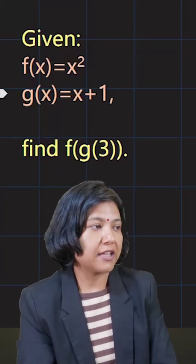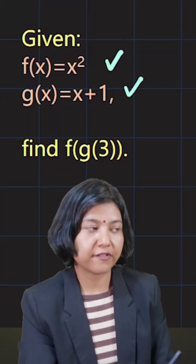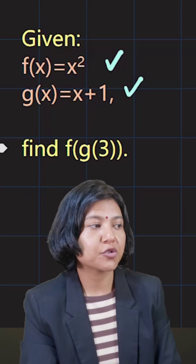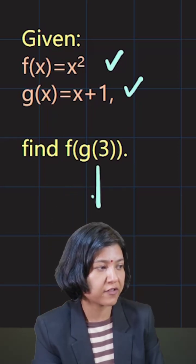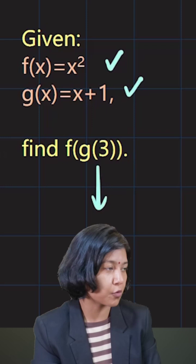You have a composite function. They have given you two functions, f(x) and g(x), and they're asking you to find the value of f(g(3)). This means your main function that you're solving first is the g function, the inner one.